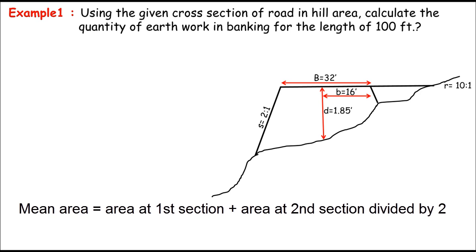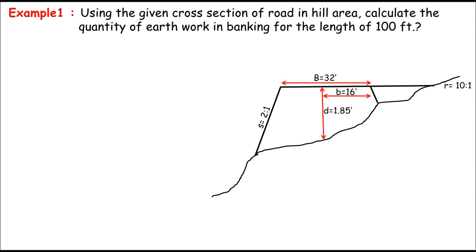However, just remember one thing. If there are two or more than two cross sections given, so we'll calculate the section area of each section separately. And then we'll calculate the mean area for each two sections. So that will be considered as the cross section area. And then we'll multiply that cross section area with the length of the road. So we can get the earthwork. That's just the simple calculation.